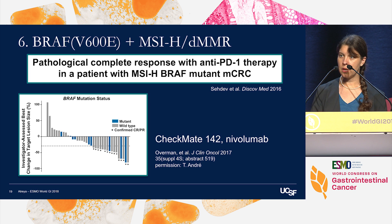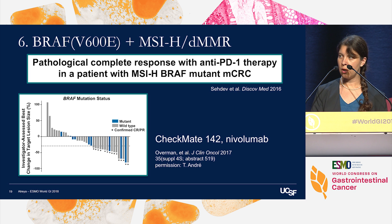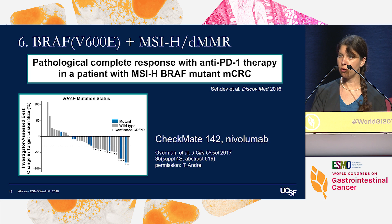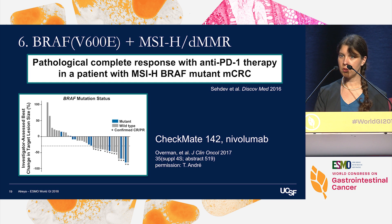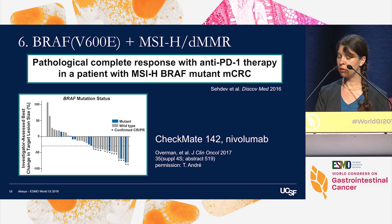In patients with microsatellite-unstable tumors, I recommend early use of checkpoint inhibitor immunotherapy. The waterfall plot here is from the Checkmate 142 study with nivolumab, and you can see that the distribution of responses in patients with BRAF-mutated tumors — the blue bars — is similar to that of patients with BRAF wild-type tumors — the gray bars.